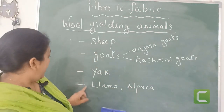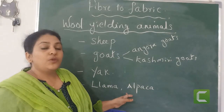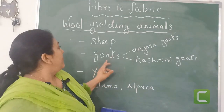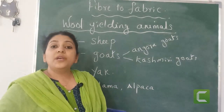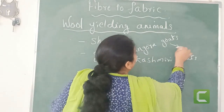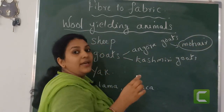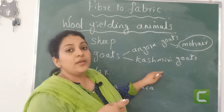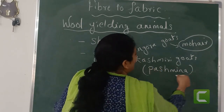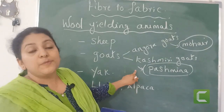From different types of animals we are getting different types of wool. For example, from Angora goats we are getting a wool called Mohair. So what is the name of the wool obtained from Angora goats? It is Mohair. And Kashmiri goats give us Pashmina. Pashmina is a beautiful and very soft wool obtained from Kashmiri goats.